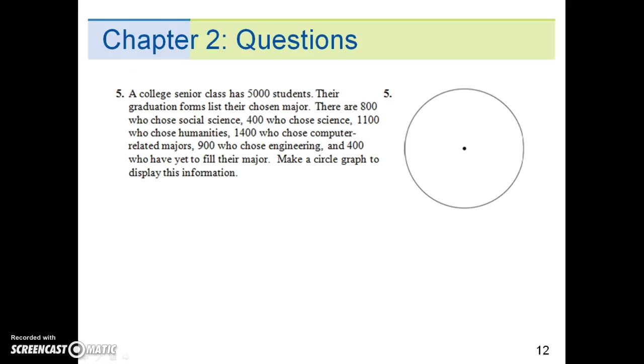Question number 5. A college senior class has 5,000 students. Their graduation form lists their chosen major. There are 800 who chose Social Science, 400 who chose Science, 1,100 who chose Humanities, 1,400 who chose Computer-Related Majors, 900 who chose Engineering, and 400 who have yet to declare their major. Make a circle graph to display this information.